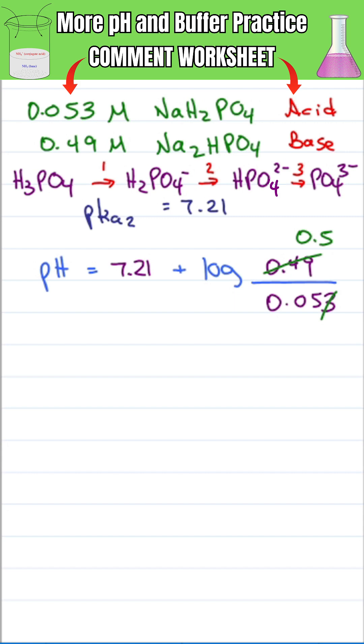If you can't see it right away, do the decimal trick: move it twice to the right for the top and bottom. This gives you 50 over 5, which reduces to 10 over 1. Log of 10 equals 1, making this entire expression just 1.